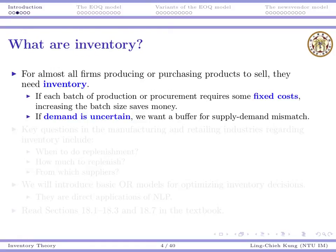For most firms producing and purchasing products, they need inventory for various reasons. Two of the most obvious issues are the following. First, typically each batch of production or procurement involves some fixed cost. When you want to produce a batch, you need to set up your machine or bring in personnel, and so on. So if your batch size is larger, you can spread that fixed cost across more units.